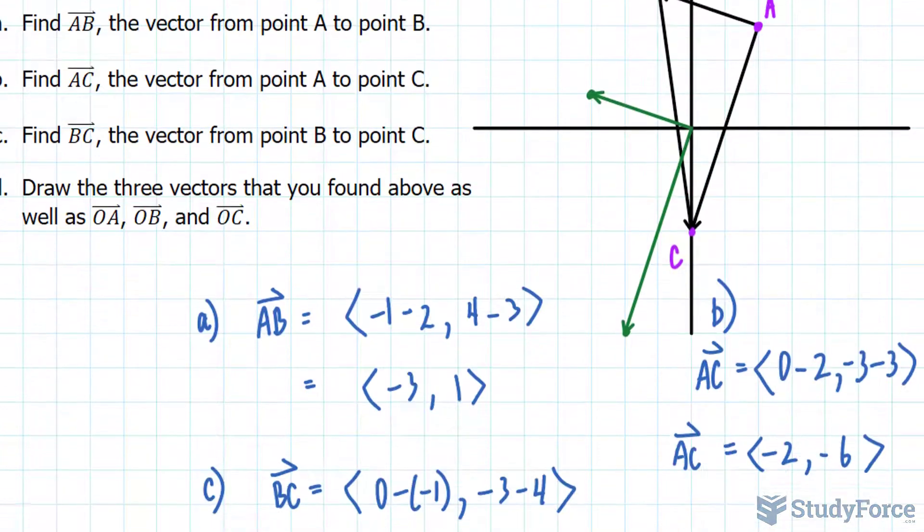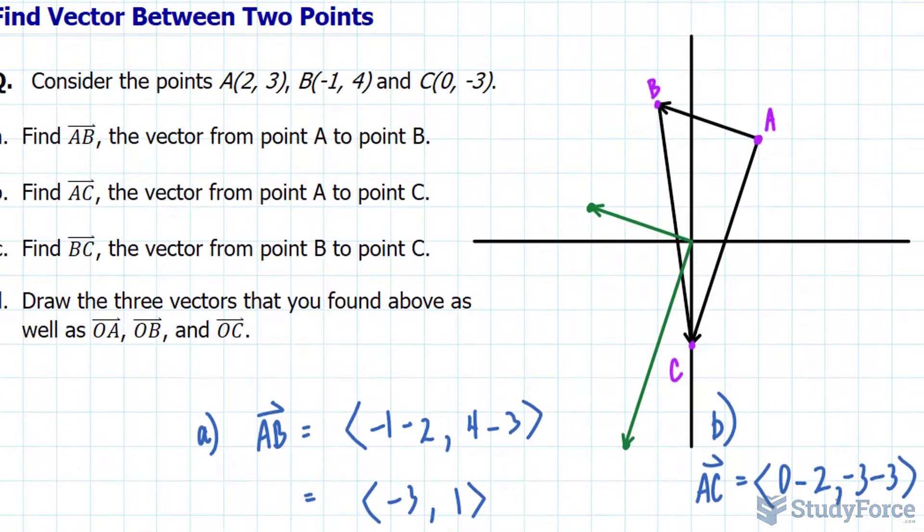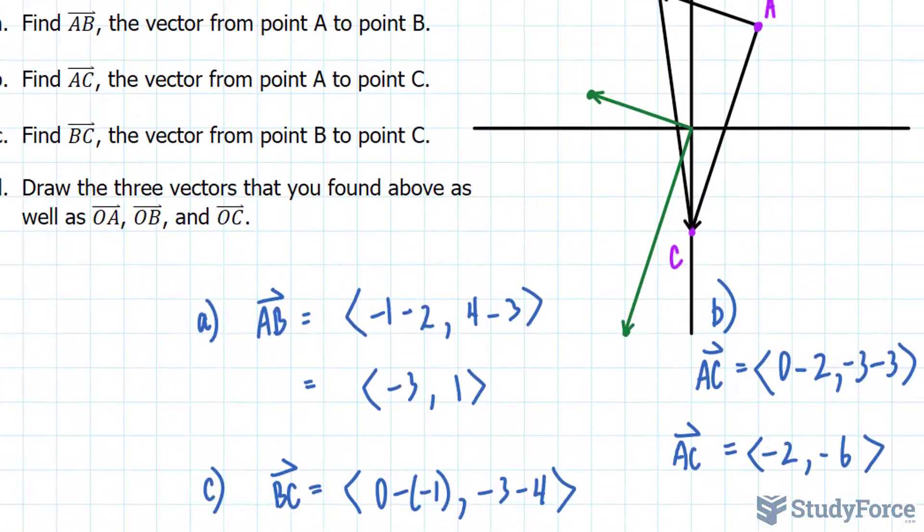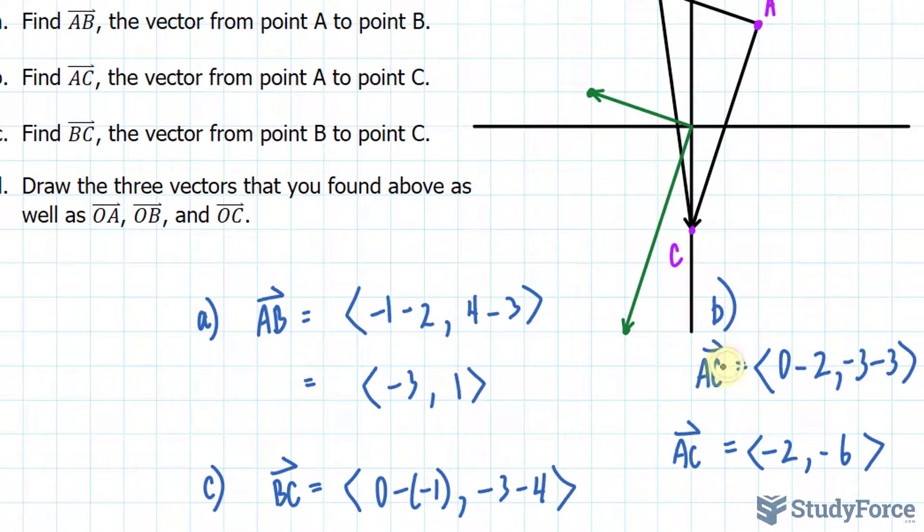And the same applies if I were to graph BC. BC would have the coordinates (1, -7), which would mean somewhere over here.